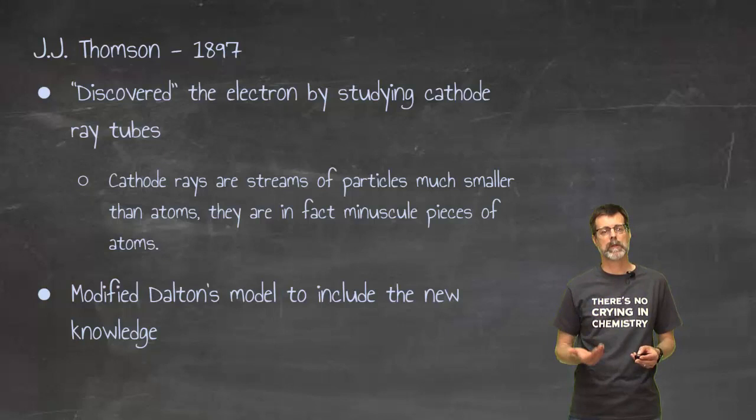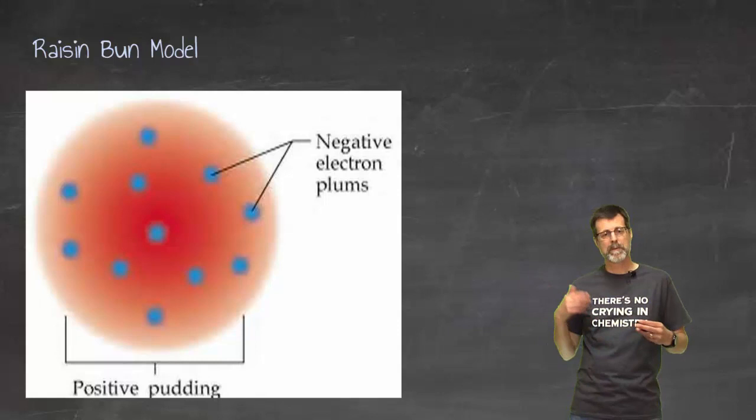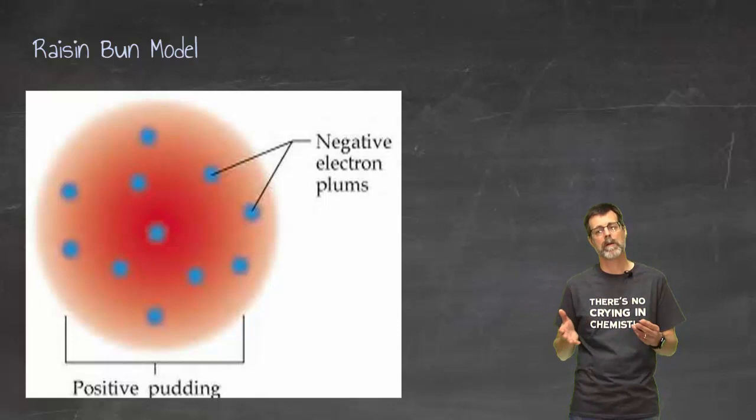So he took Dalton's model because he liked the idea of spheres, but he had to include an electron into it. We'll explain this and go into a little bit more detail, although we don't use this model anymore. We do need to know how we discovered the electron.